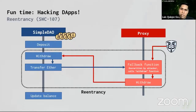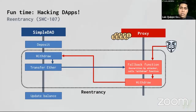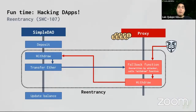This loop is called reentrancy, and it will happen again and again until all the money of SimpleDAO flows to Proxy. Normally, if you deposited two ETH, you can withdraw only two ETH — you cannot withdraw other users' money. But with a reentrancy attack, you can drain all users' funds. This is a hacking masterpiece — this is a love letter to hacking.